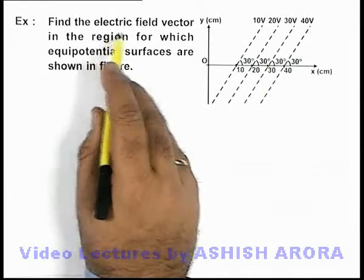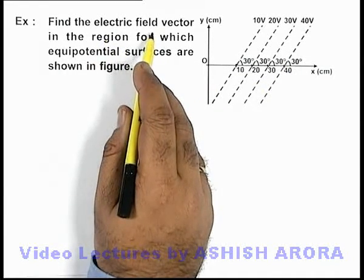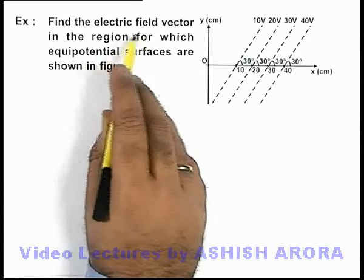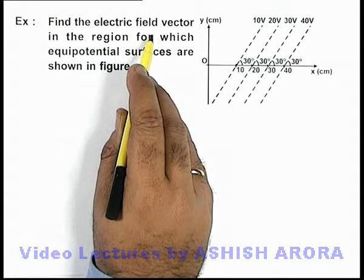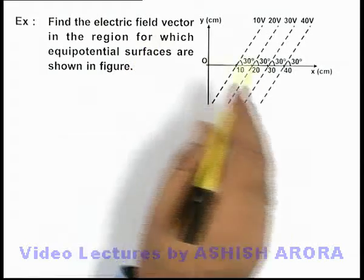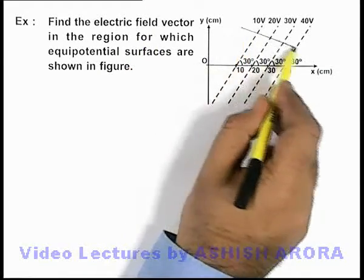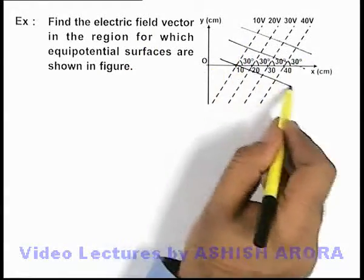And in this situation if we wish to find out the electric field vector, we know that electric field is always in the direction perpendicular to the equipotential surfaces. So here we can see that electric field will exist in such a direction.